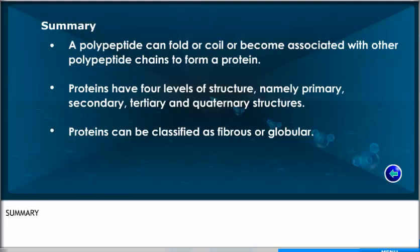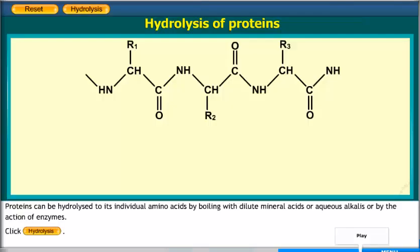Proteins can be hydrolyzed to their individual amino acids by boiling with dilute mineral acids or aqueous alkalis or by the action of enzymes. Click the hydrolysis button.